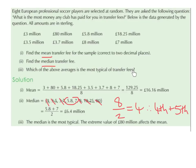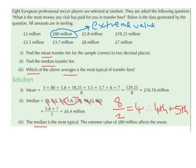Part three: which of the averages is most typical of the transfer fees? The median is going to be the most typical and the best average to use. There is no mode, since no number appears twice. We also can't use the mean because we have an extreme value of 80 million, which is also known as an outlier — it's much higher than all the rest of the values. 18.25 is quite high too, but it's much closer to the rest of the data than 80 million.